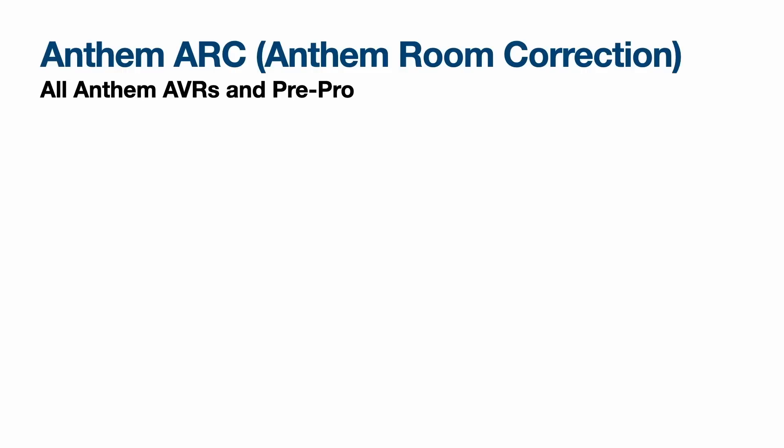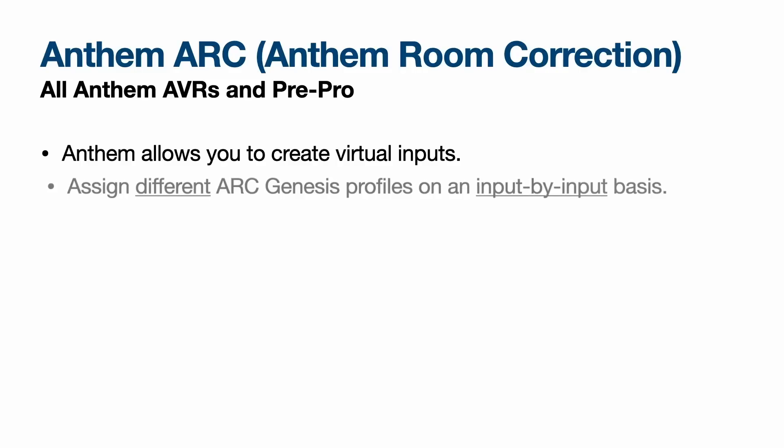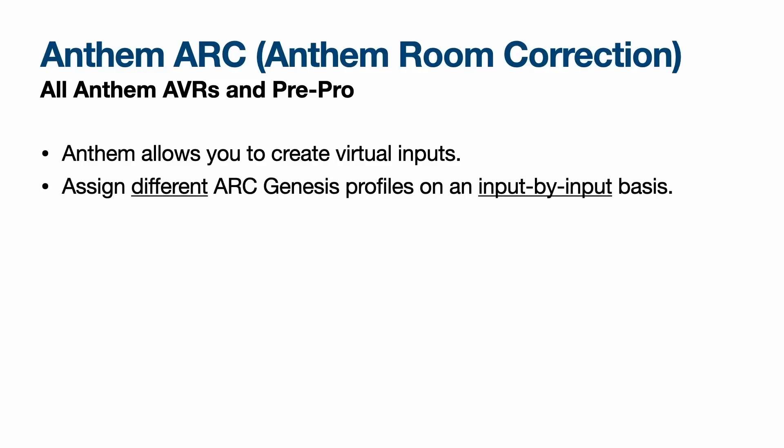What's really nice with Anthem products using Anthem Room Correction is that all Anthem AVRs and pre-pros allow you to create virtual inputs. With a virtual input, you can assign a different Arc Genesis profile on an input-by-input basis, even for the same source. For example, you could have an Apple TV 4K input assigned to your Atmos movie calibration with the bass boosted by, say, 6 dB — and call that input 'ATV 4K Atmos.'